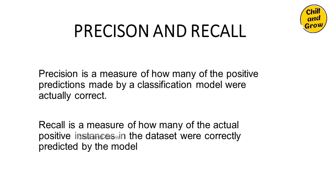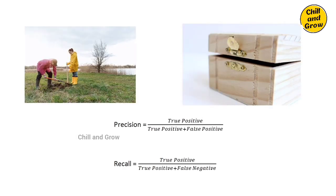Let me give you an example to make this clearer. You are going on a treasure hunt. There is a special device in your hand — if you put it over a spot and there is treasure, it will make a sound. Your goal is to find all the treasures. How do precision and recall work in this context?